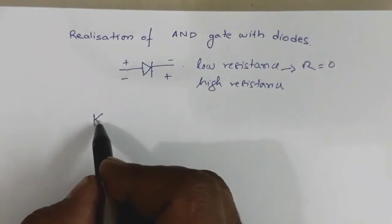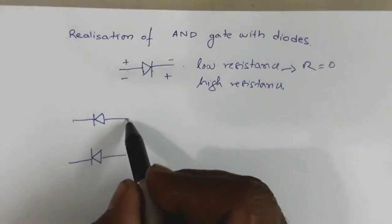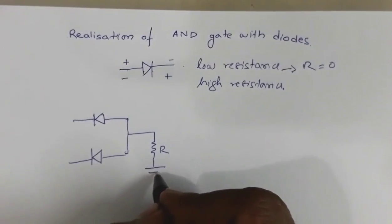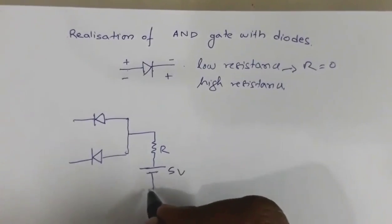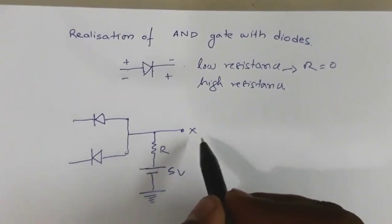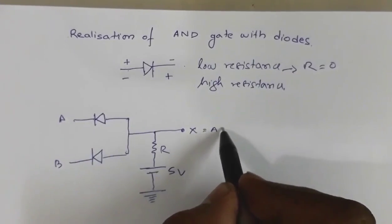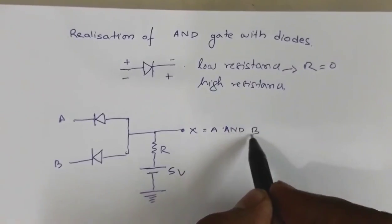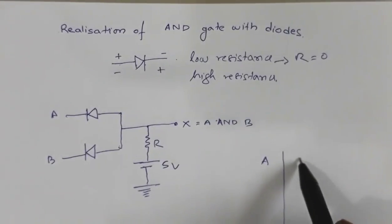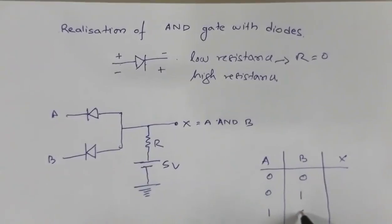In the AND gate we will have two diodes. There is a common terminal resistor R, a 5-volt battery with its negative terminal connected to earth, and an output terminal X. Input A and input B are connected such that X equals A AND B. Now let us make the truth table: A=0,B=0 gives X=0; A=0,B=1 gives X=0; A=1,B=0 gives X=0; A=1,B=1 gives X=1.